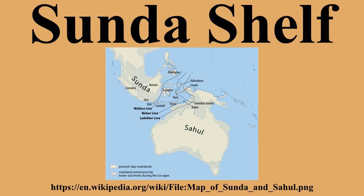Biogeographically, Sundaland is a term for the region of southeastern Asia which encompasses these areas of the Asian continental shelf that were exposed during the last ice age. Sundaland included the Malay Peninsula on the Asian mainland, as well as the large islands of Borneo, Java, and Sumatra and the surrounding islands. The same steep undersea gradients that mark the eastern boundary of Sundaland are identified biogeographically by the Wallace Line, identified by Alfred Russel Wallace, which marks the eastern boundary of Asia's land mammal fauna.